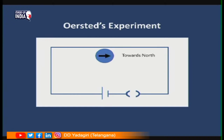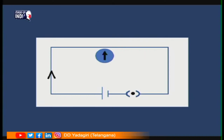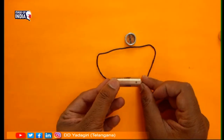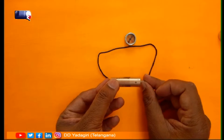Now let us see Orsted's experiment. This is the setup: Orsted arranged a wire connected to a battery, with a magnetic compass placed close to it. The magnetic compass always points towards geographic north. When current is flowing in the wire, Orsted observed that the magnetic compass got deflected and its direction changed. As long as there is no current, the compass pointed north; when there was current, the compass direction changed.